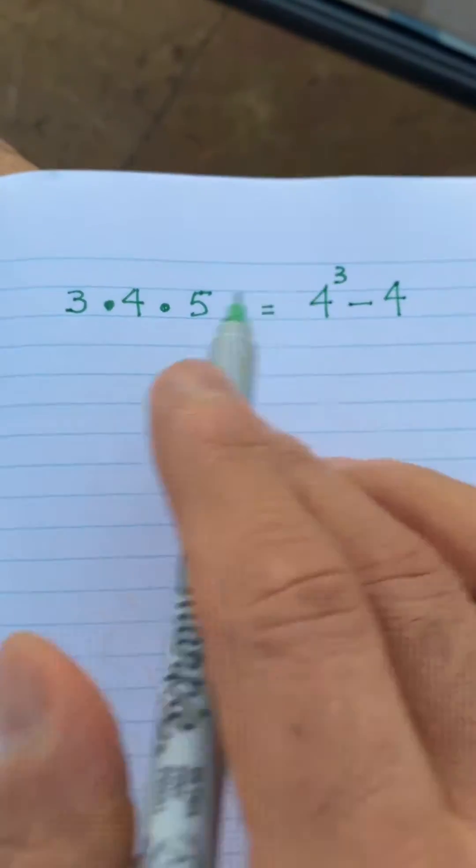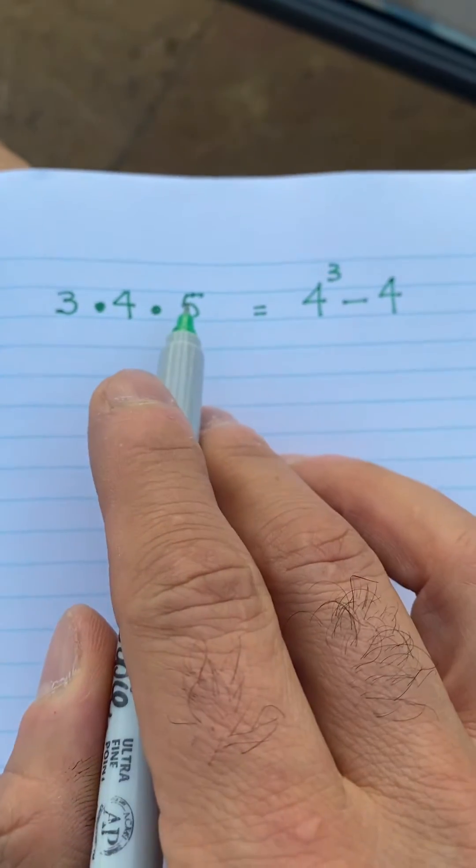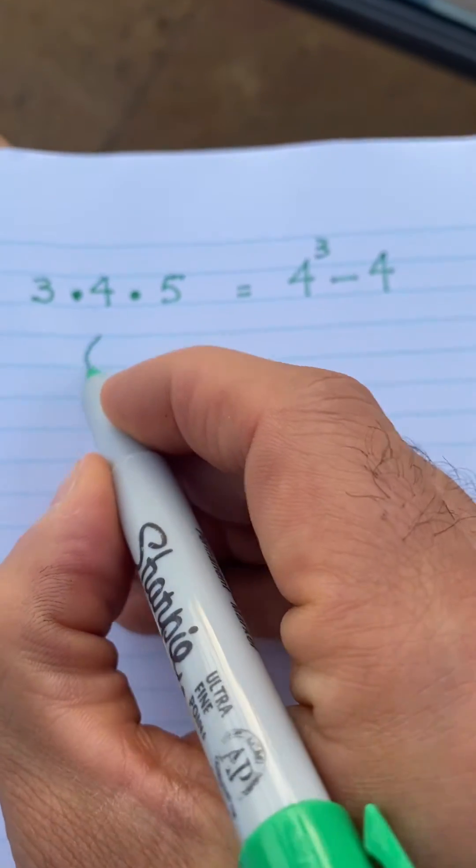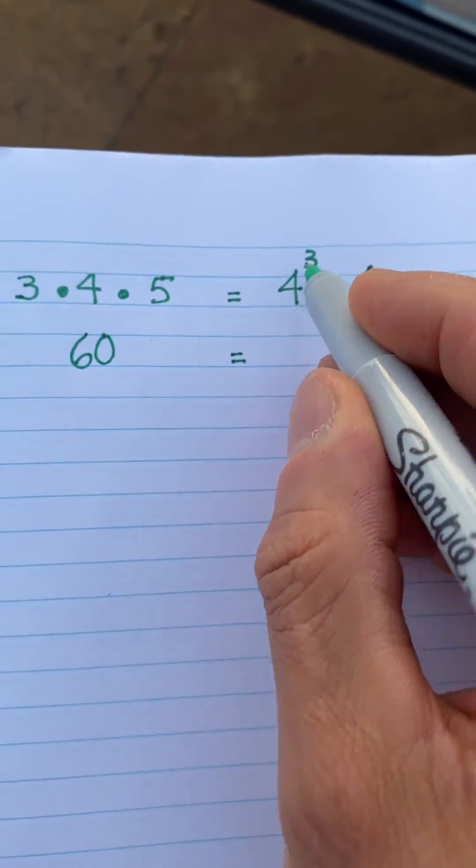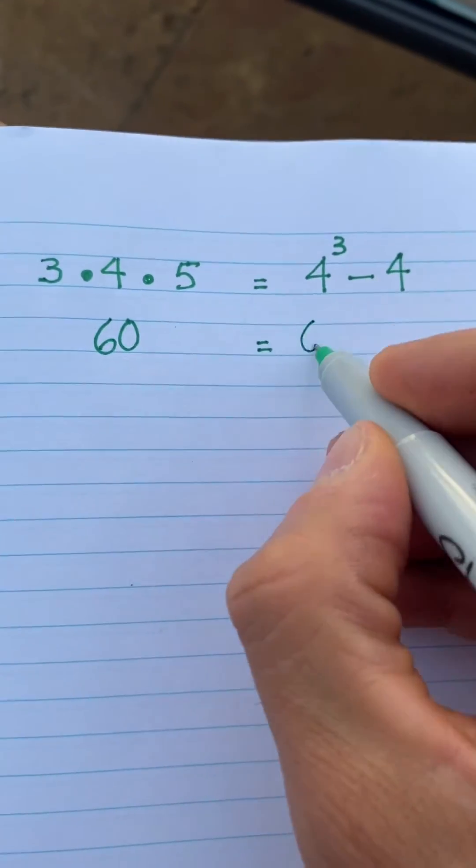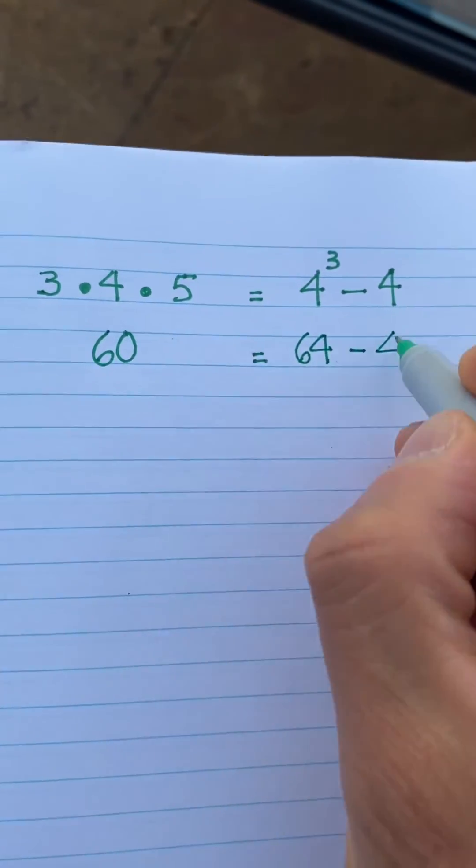You don't believe me? Do the math. 3×4×5 equals 60, and that's the same thing as 4³, which is 4×4×4, that's 64 minus 4. It works.